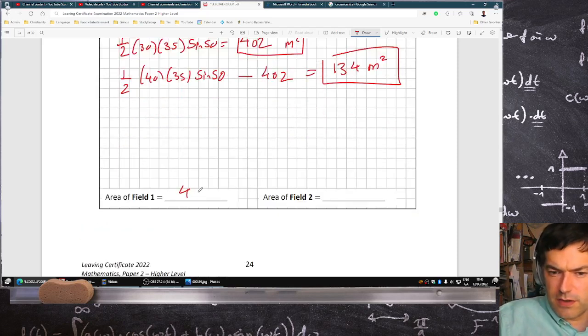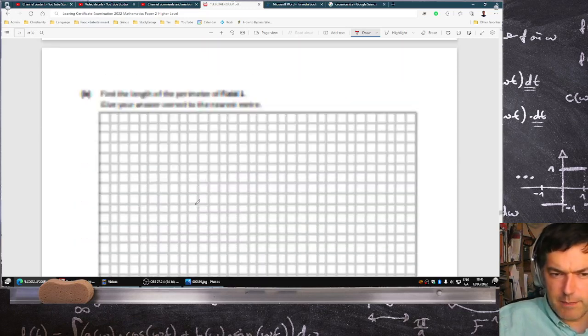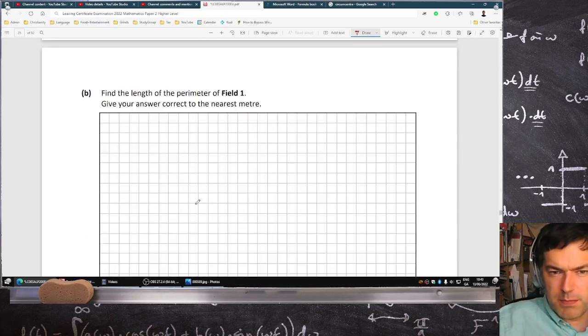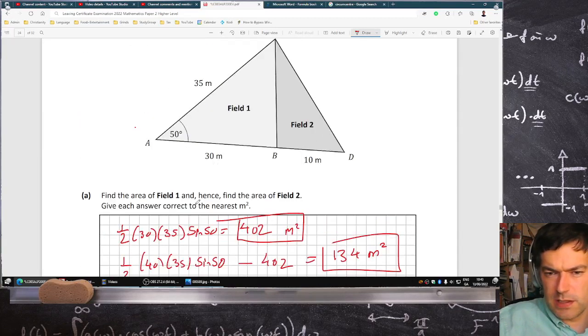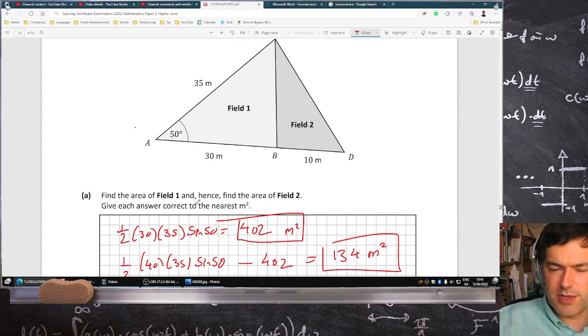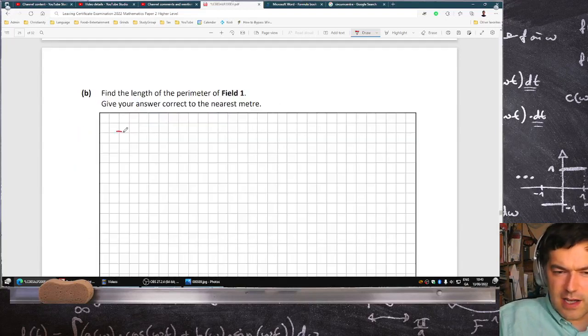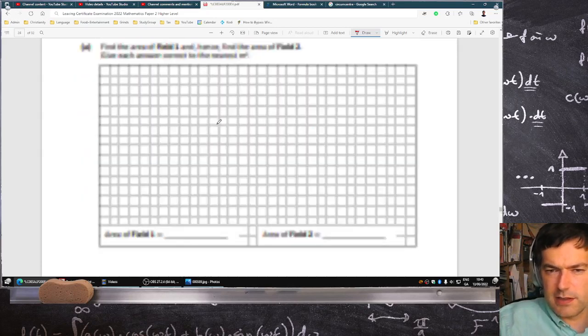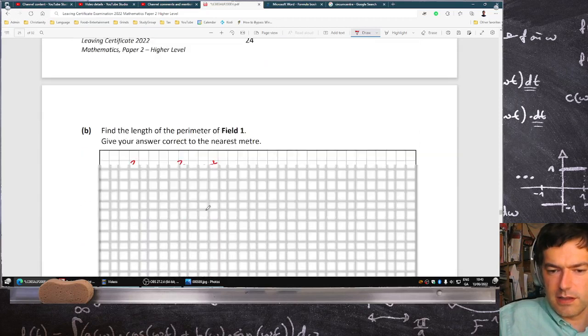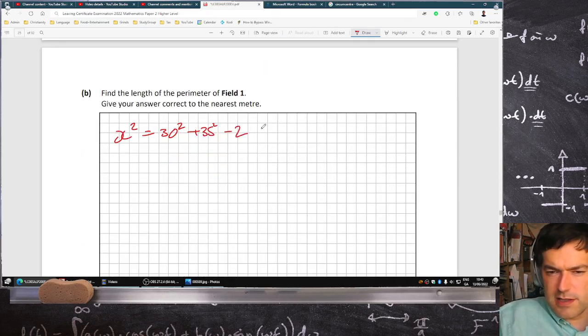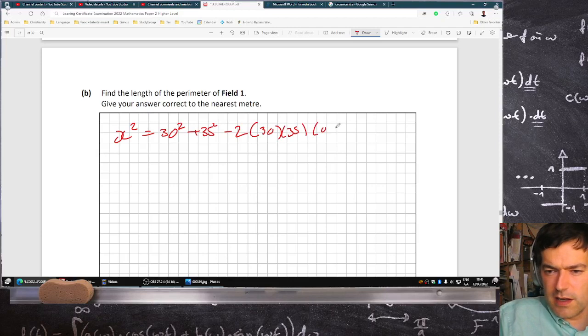Find the length of the perimeter of field one. So you want the missing side there, so that's the cosine rule. I'll call that x. So it's x squared equals 30 squared plus 35 squared, minus twice 30 times 35 times cos 50.